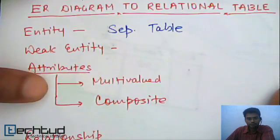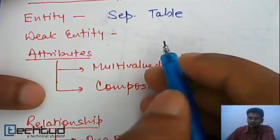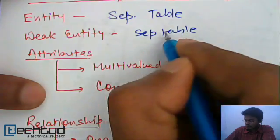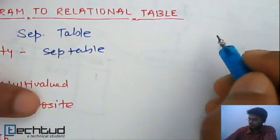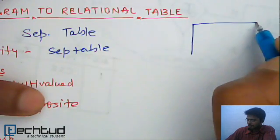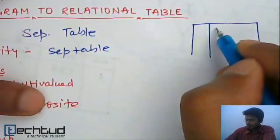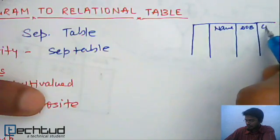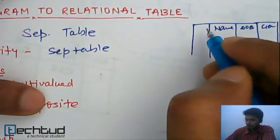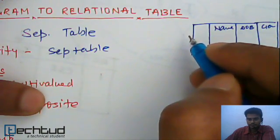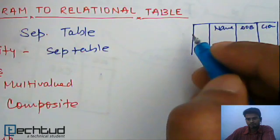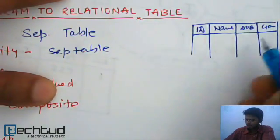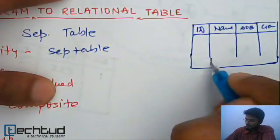For weak entity, we also need to create a separate table. For example, if you have a 'dependent' entity in the database, you will store attributes like name, DOB, and gender. You also have to store the key of the identifying (strong) entity associated with the weak entity through the identifying relationship — this will be the ID of the strong entity.